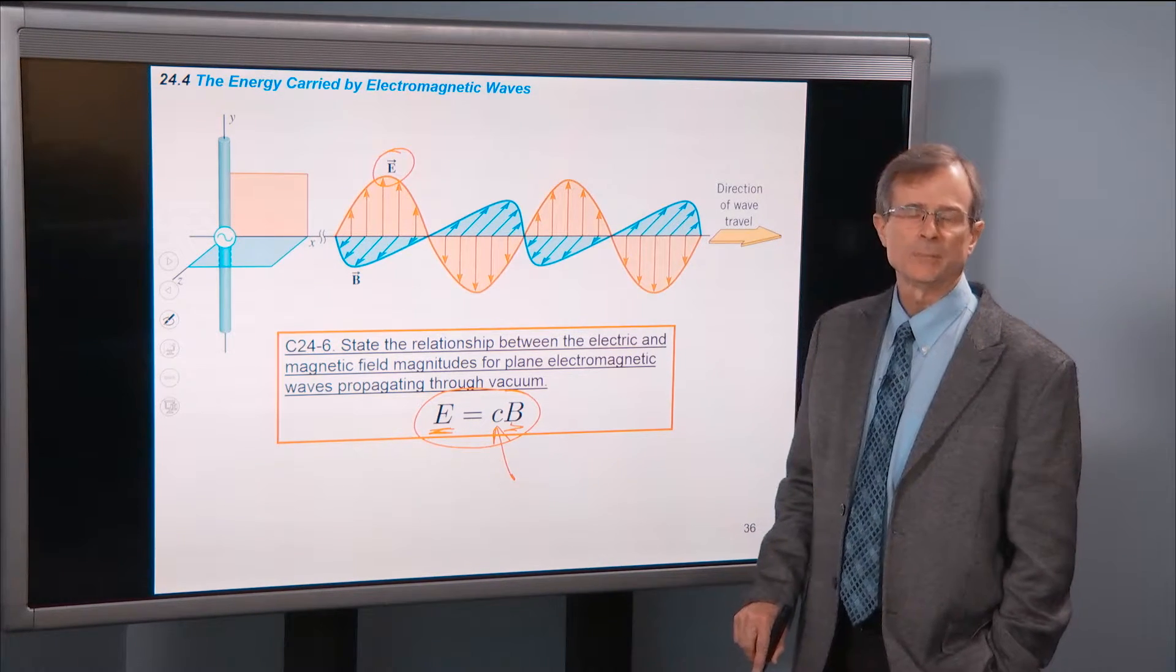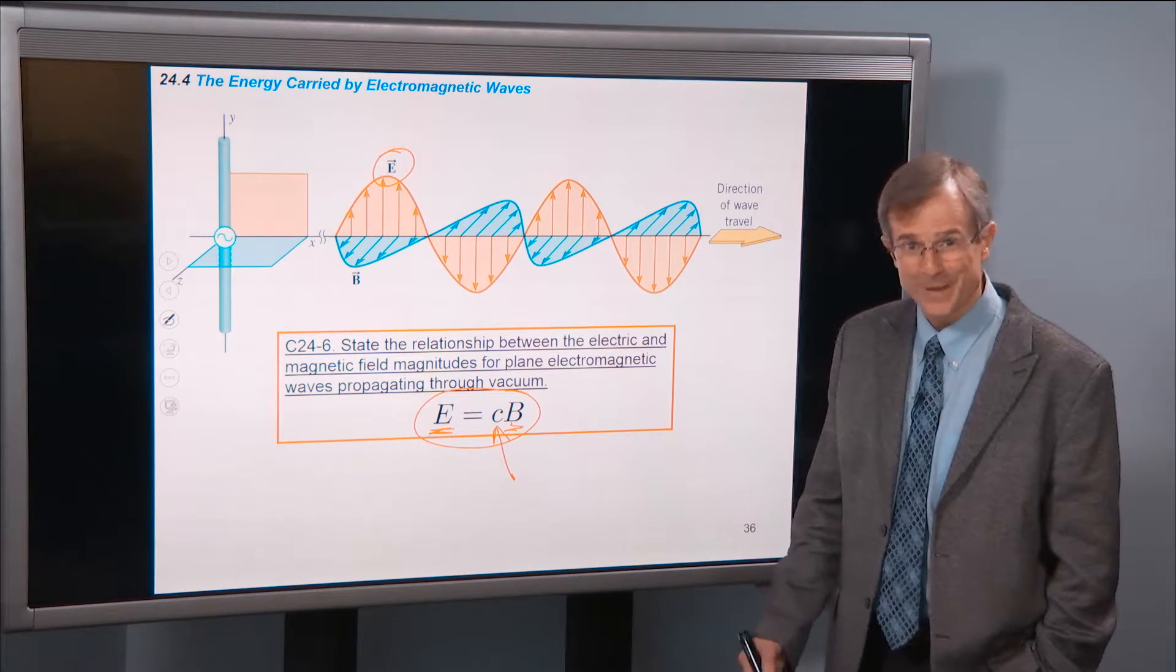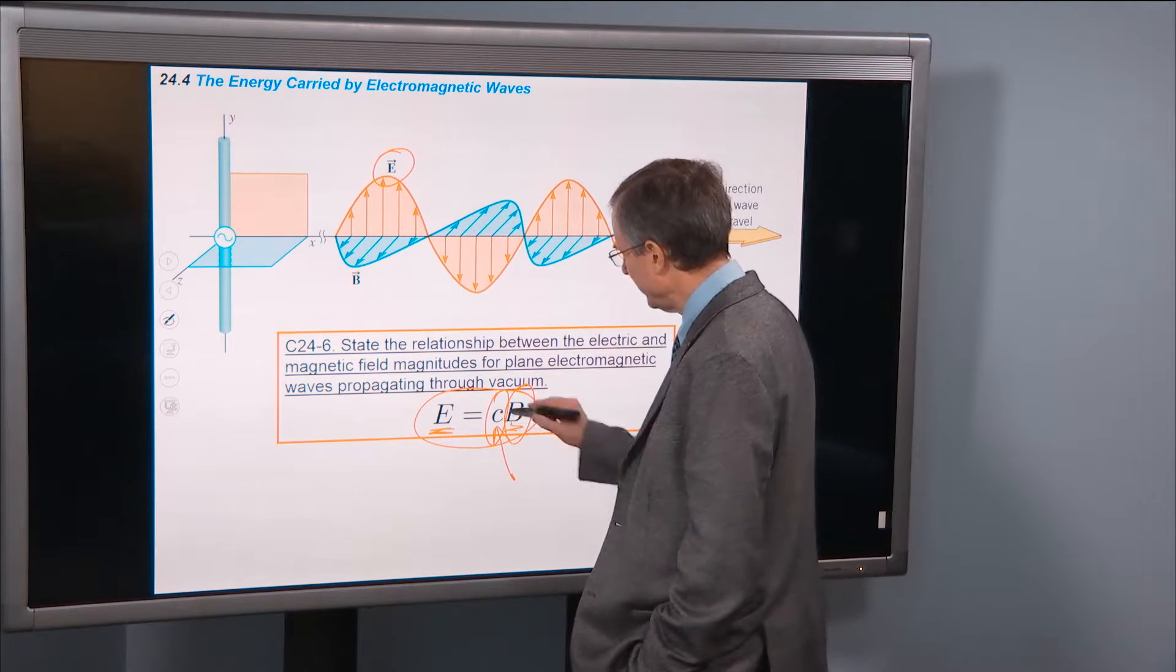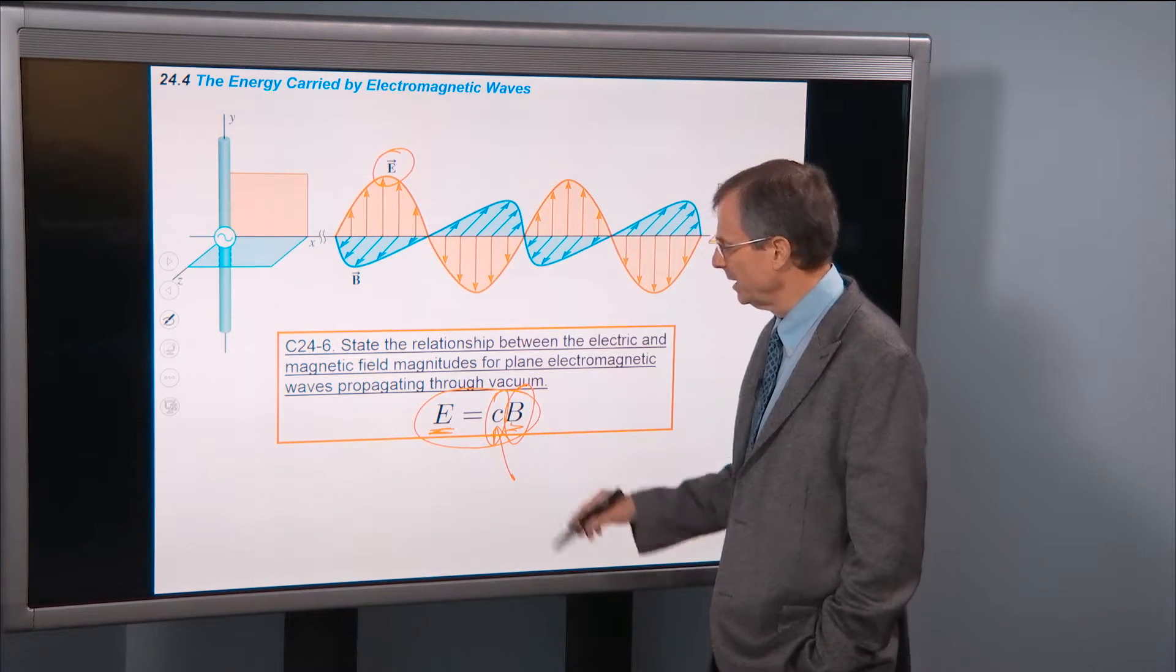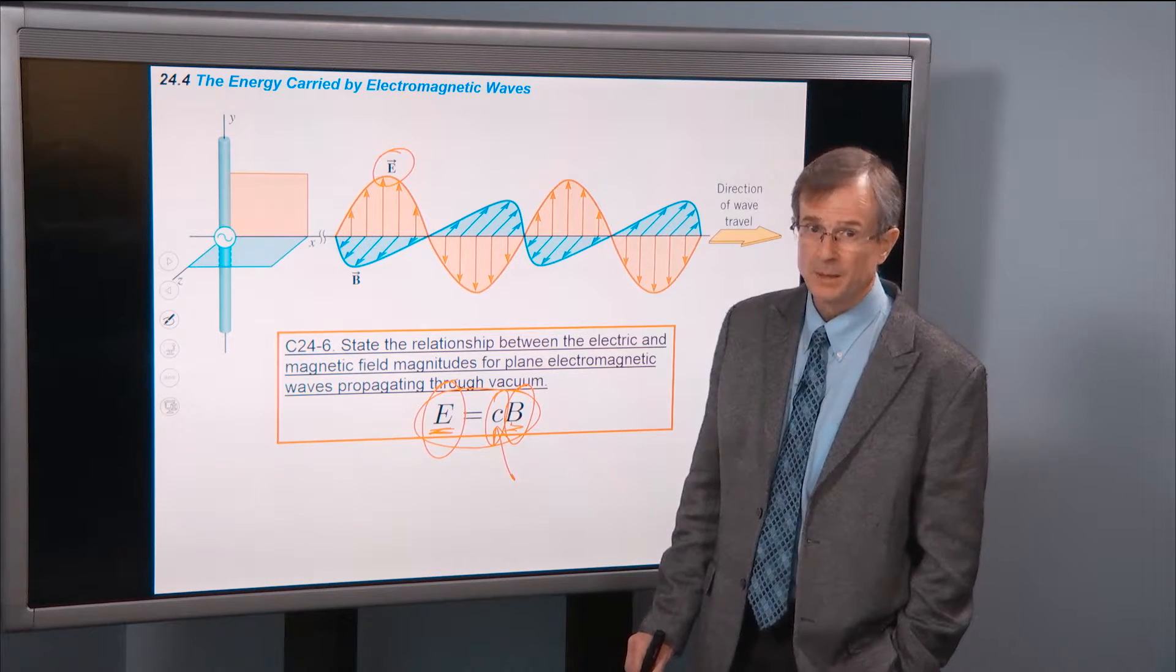Is c a big number or a small number? 3 times 10 to the 8. You say, well, it's a big number. It's a fast speed. So we're taking a big number here and multiplying that big number by b. So what's e going to be? e's going to be a big number.